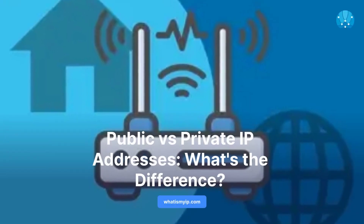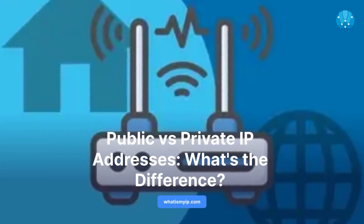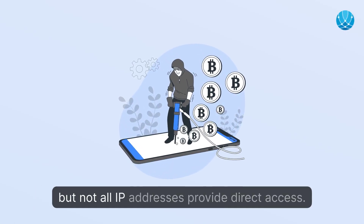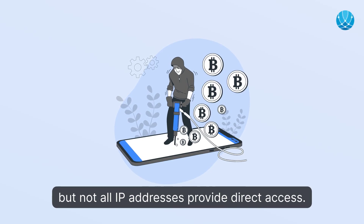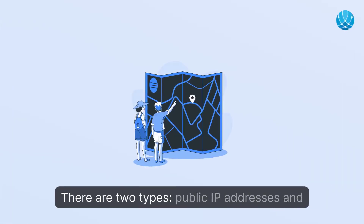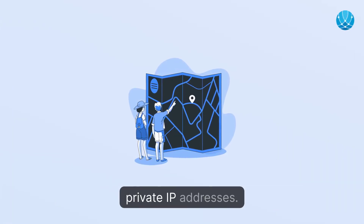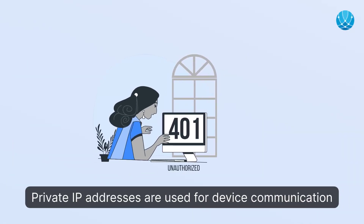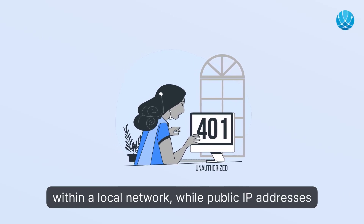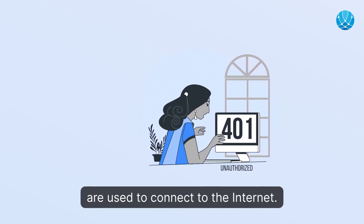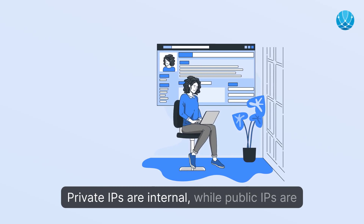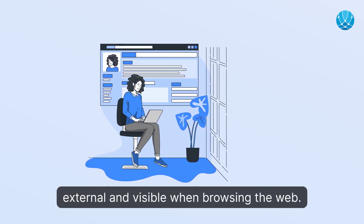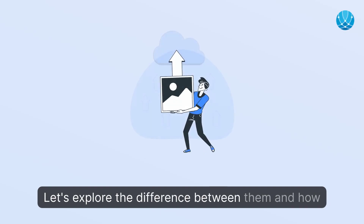Public versus private IP addresses — what's the difference? IP addresses are essential for accessing the internet, but not all IP addresses provide direct access. There are two types: public IP addresses and private IP addresses. Private IP addresses are used for device communication within a local network, while public IP addresses are used to connect to the internet. Private IPs are internal, while public IPs are external and visible when browsing the web.